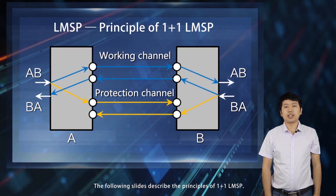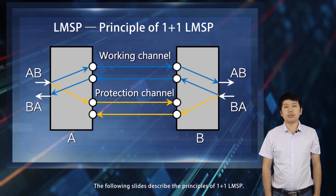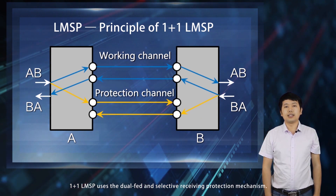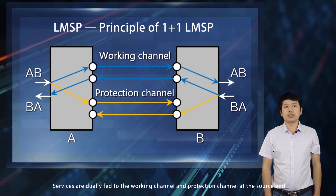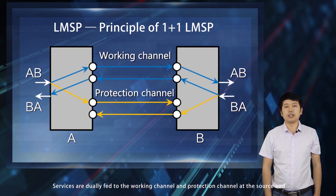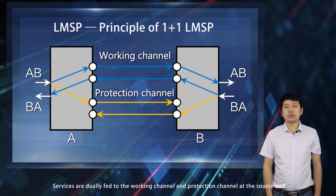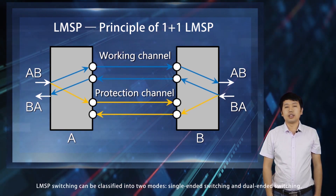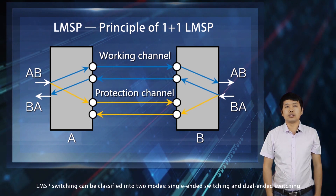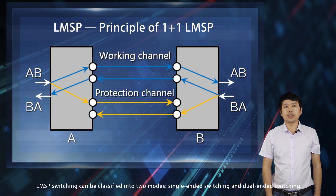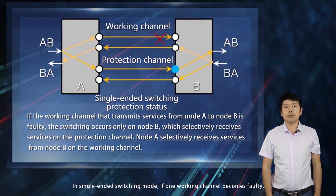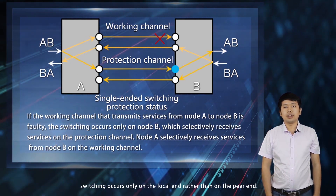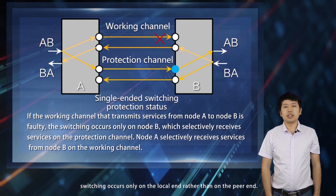The following slides describe the principles of 1+1 LMSP. 1+1 LMSP uses the dual-fed and selective receiving protection mechanism. Services are dually fed to the working channel and protection channel at the source end and selectively received at the sink end. LMSP switching can be classified into single-ended switching and dual-ended switching. In single-ended switching mode, if one working channel becomes faulty, switching occurs only on the local end rather than on the peer end.